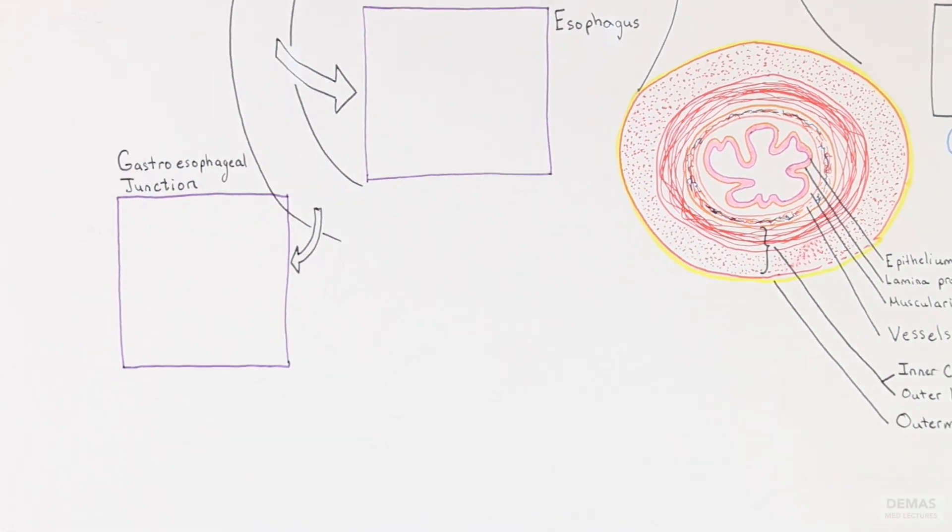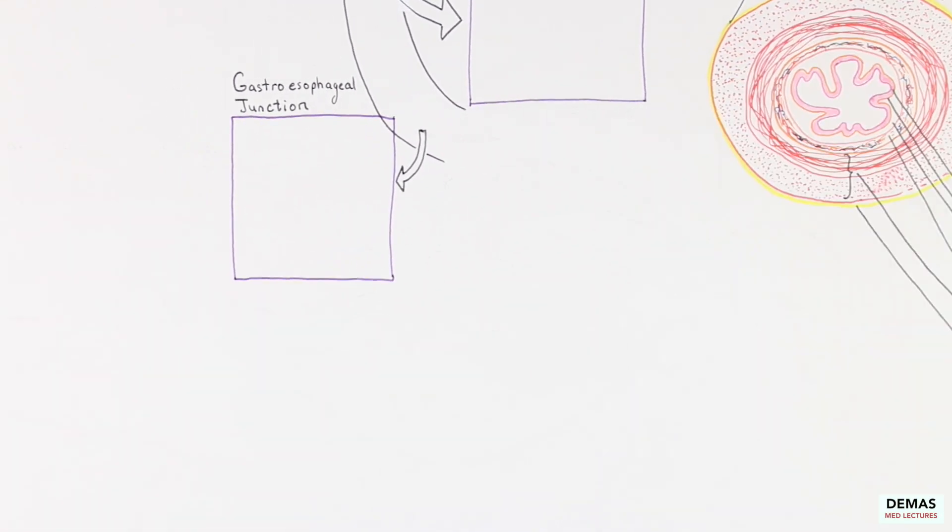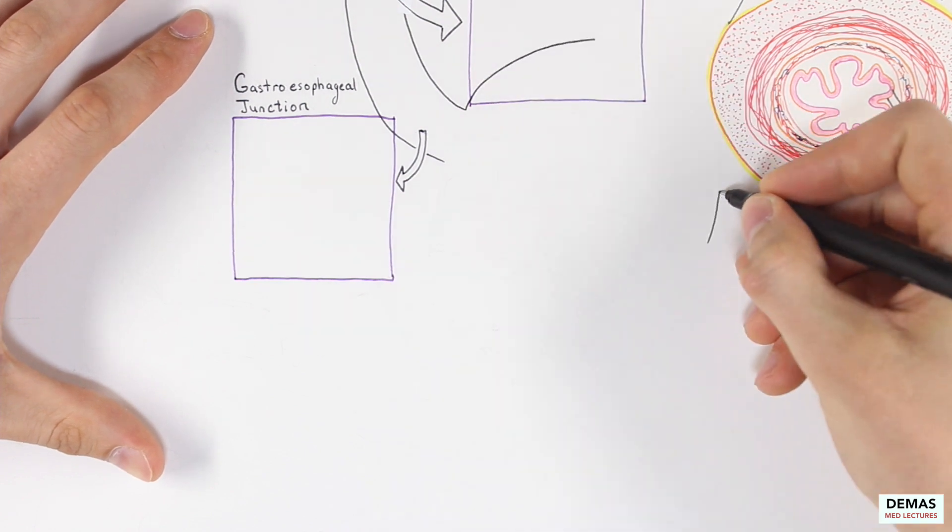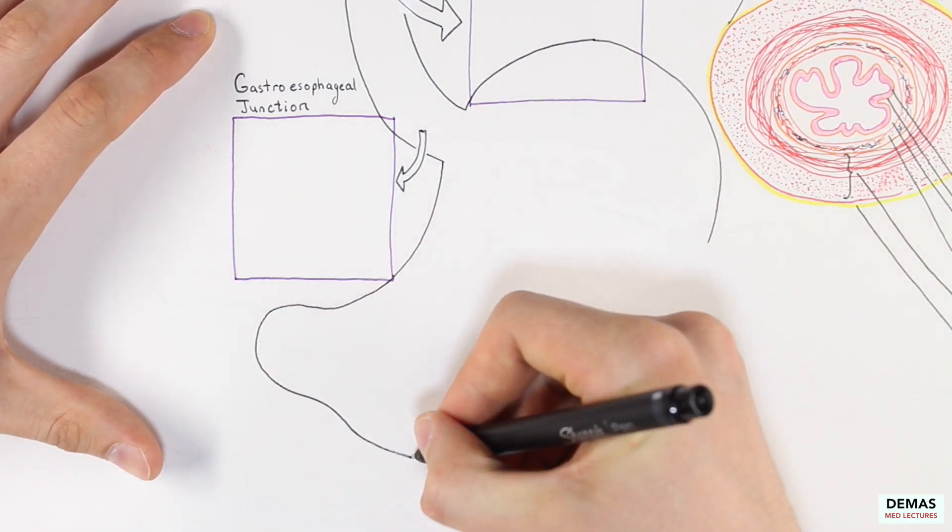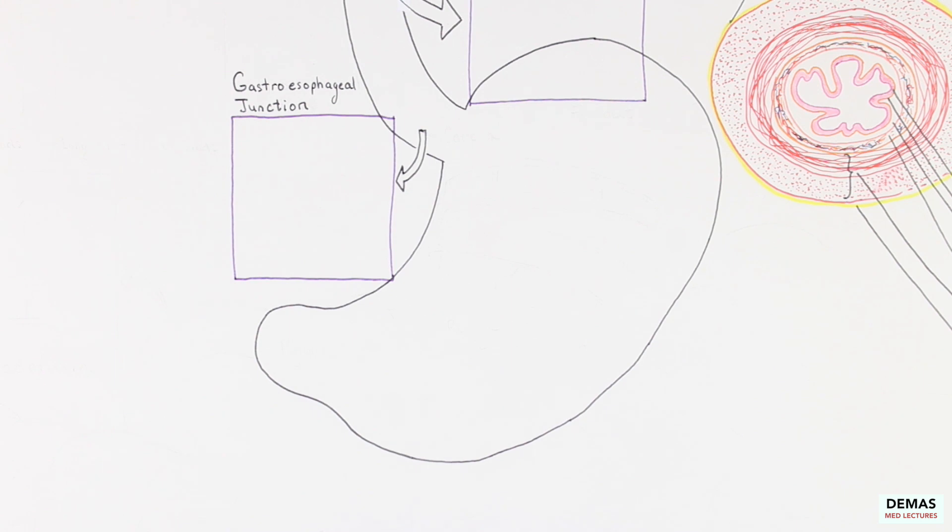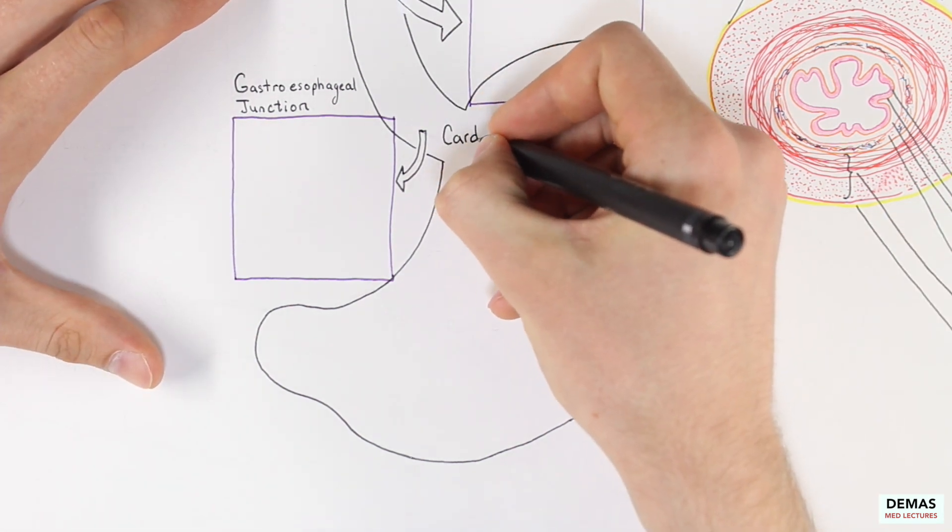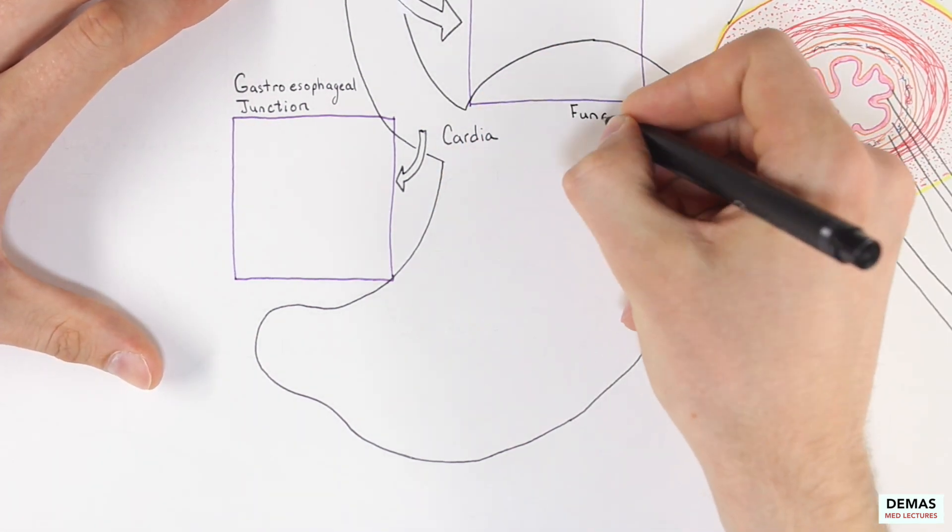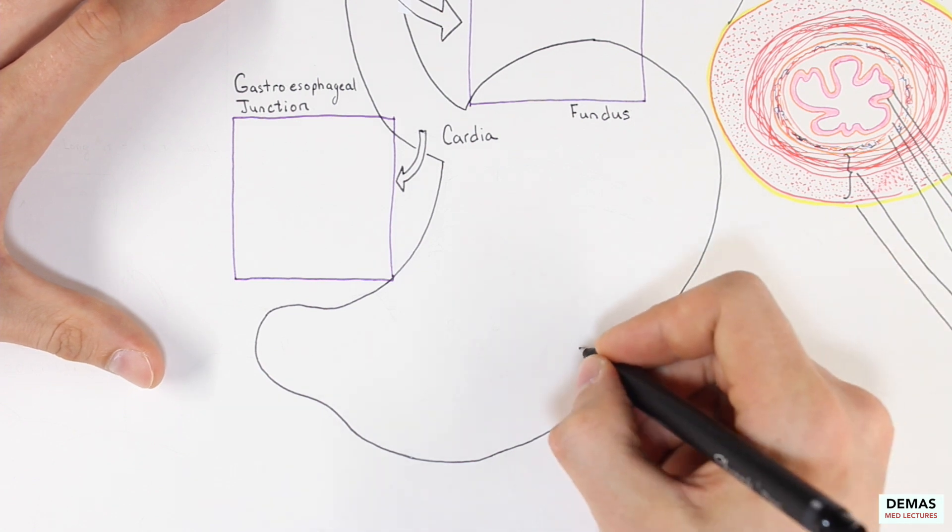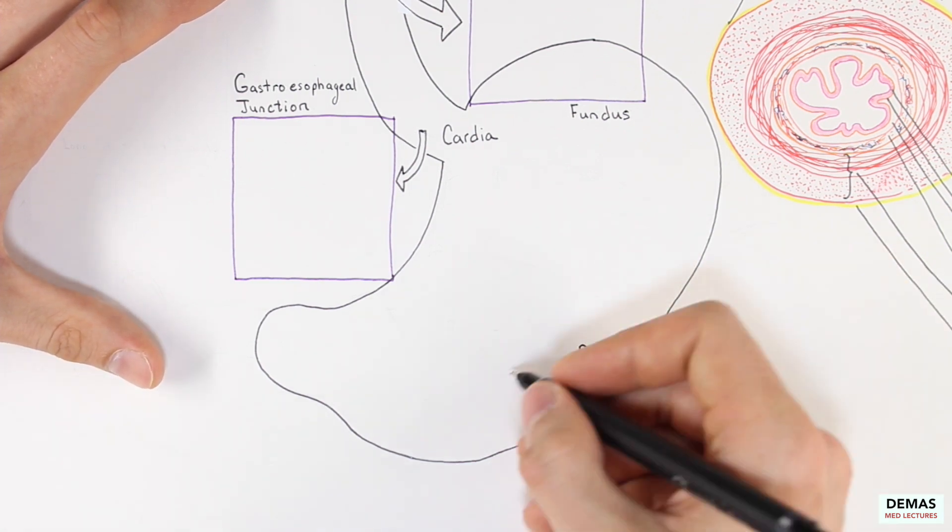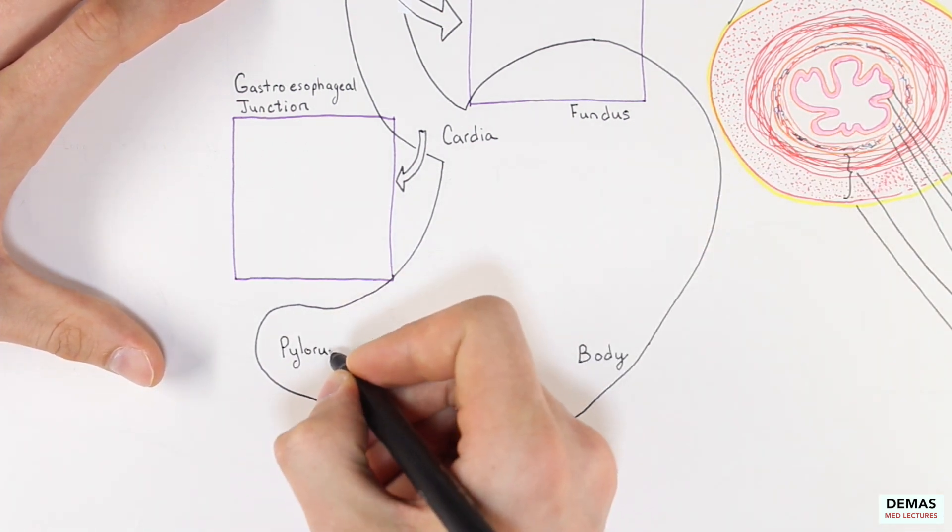Now we are going to move on to the stomach. The stomach is subdivided into four distinct areas based on the histology of the tissue in these areas. The four areas are the cardia, near the connection point of the esophagus and the stomach, the top of the stomach called the fundus, the length of the stomach called the body, and the sphincter region of the stomach called the pylorus region.